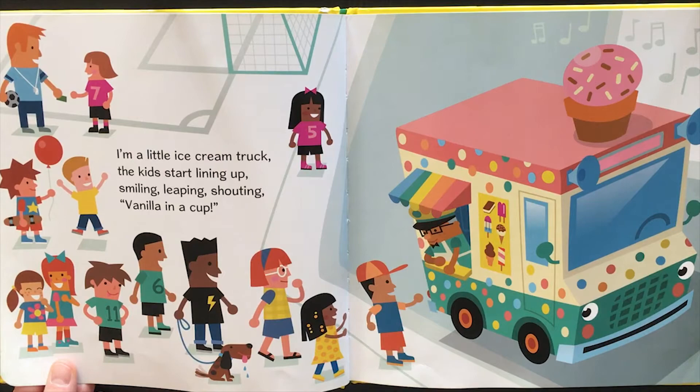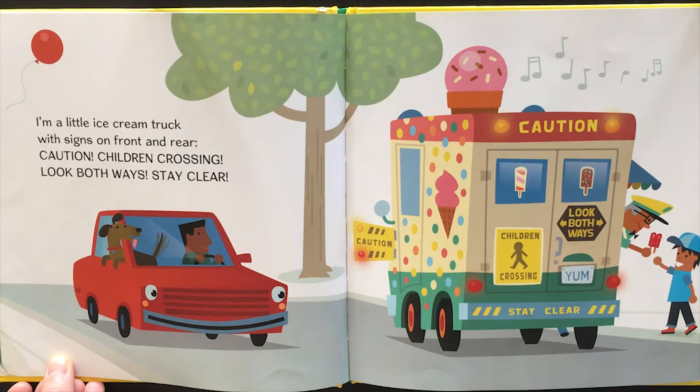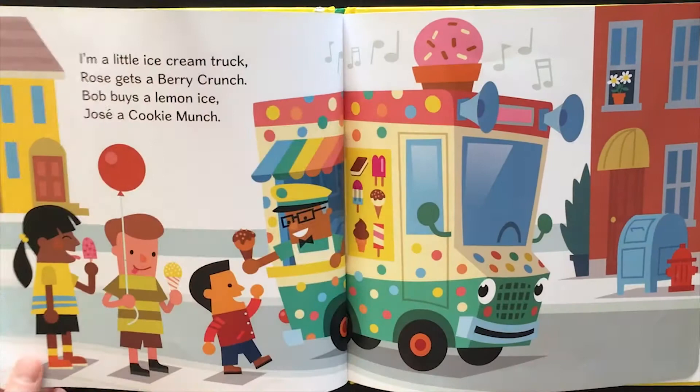I'm a little ice cream truck. The kids start lining up. Smiling, leaping, shouting. Vanilla in a cup. I'm a little ice cream truck with signs on front and rear. Caution! Children crossing. Look both ways. Stay clear.